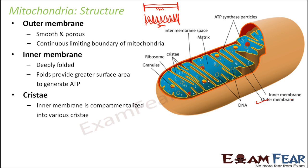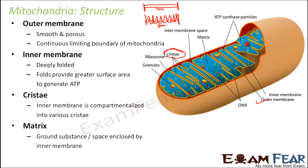The third part is cristae. The inner membrane is compartmentalized into parts called cristae — each fold forms a separate section. Please do not confuse cristae with cisternae; cisternae were the slices of the Golgi apparatus structure. The matrix is the ground substance or material enclosed by the inner membrane — the blue colored structure you see is the matrix.